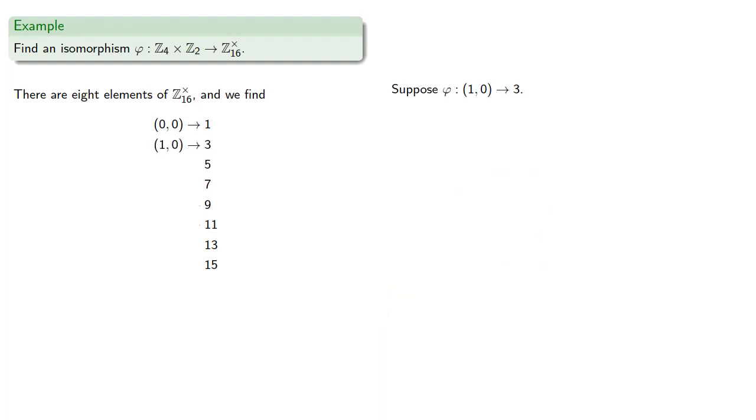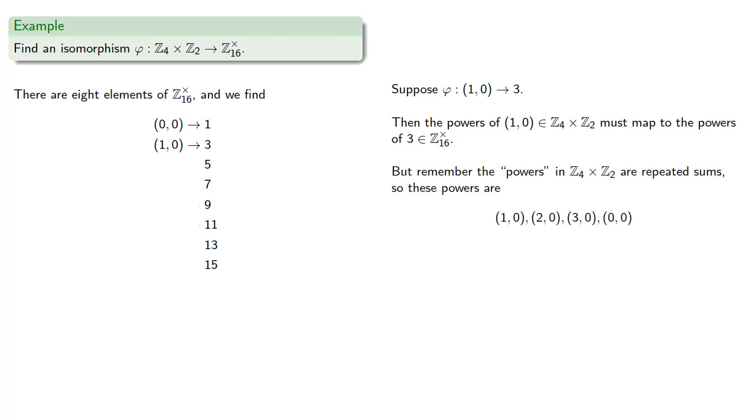So suppose phi of (1, 0) gets mapped to 3. Then the powers of (1, 0) in Z4 cross Z2 must map to the powers of 3 in our group of integers mod 16 under multiplication. But remember the powers in Z4 cross Z2 are actually repeated sums. So these powers are... And these have to be assigned to the powers of 3, which are 3, 9, 11, and 1.